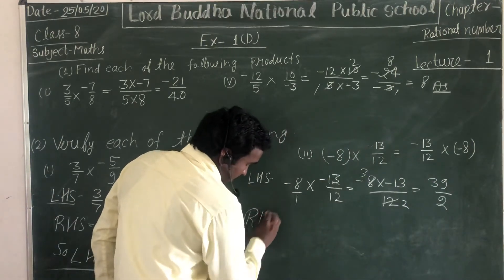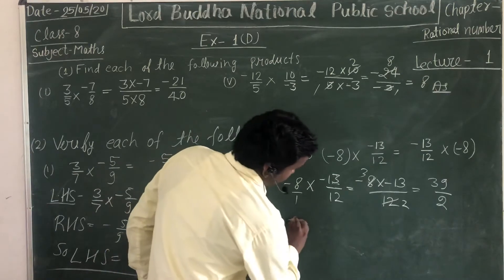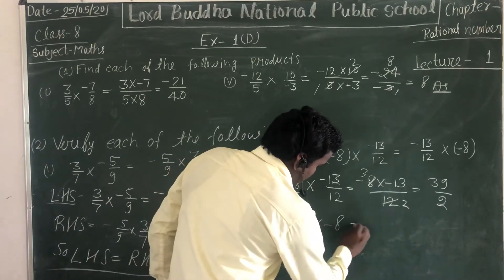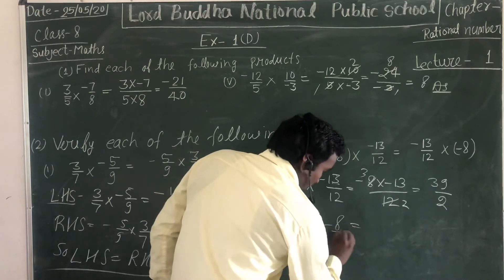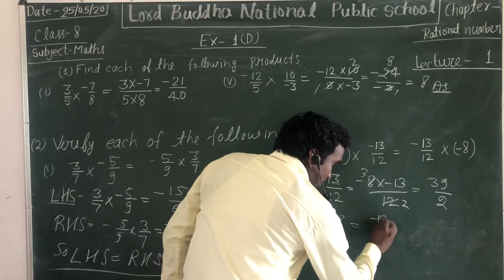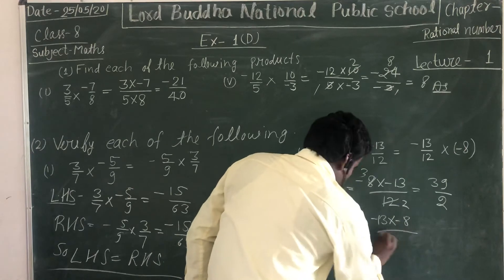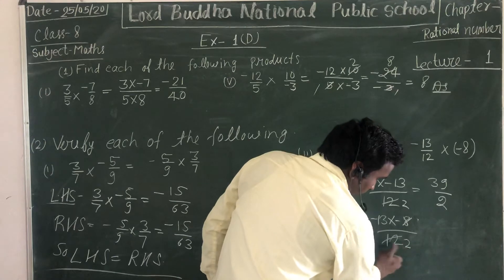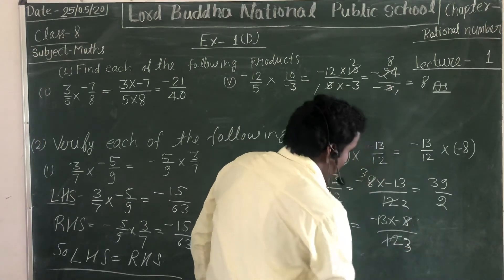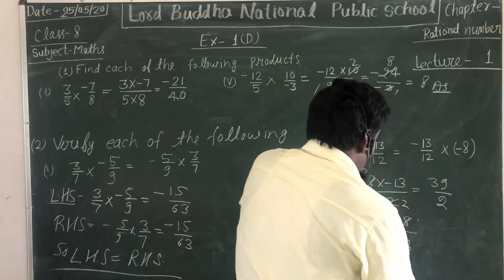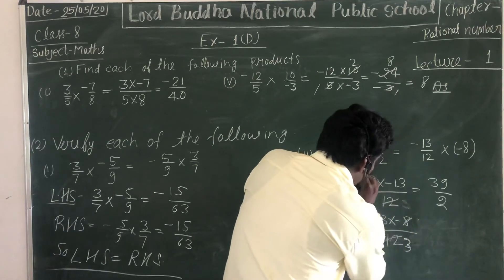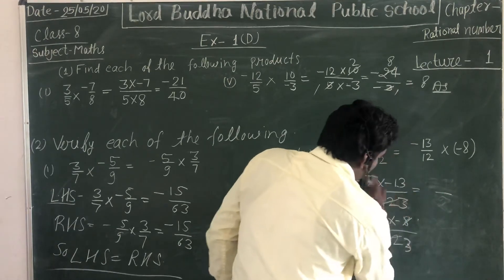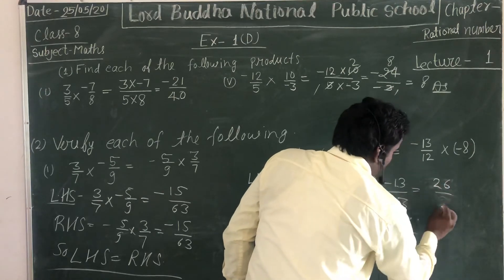Now taking the right hand side: -13/12 times -8. Simplifying, 12 divided by 4 is 3, 8 divided by 4 is 2. So we get -13/3 times -2. Computing: 13 times 2 equals 26, divided by 3.